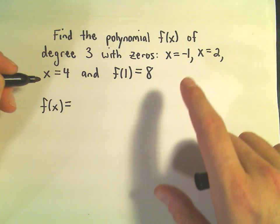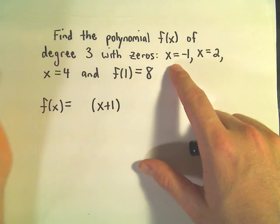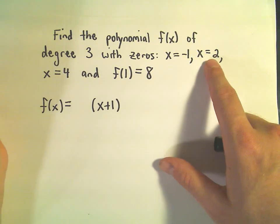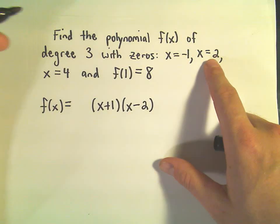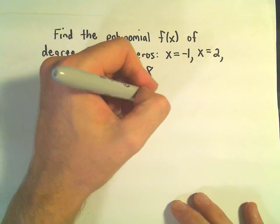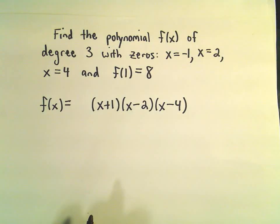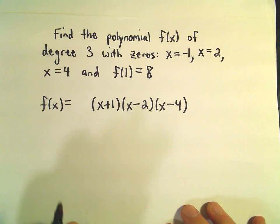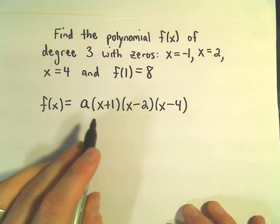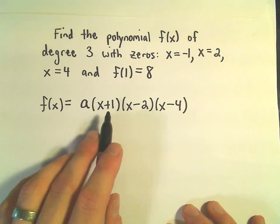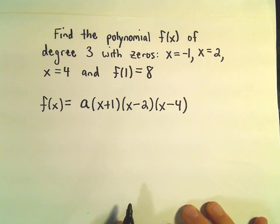So a couple things. Since we know that negative 1 is a zero, that means that x plus 1 is a factor. If x equals 2 is a zero, that means x minus 2 is also a factor. And if 4 is a zero, that means x minus 4 is also a factor. Now, we could have some number hanging out front — we'll call it a. That wouldn't change the fact that negative 1, positive 2, and positive 4 are all zeros.